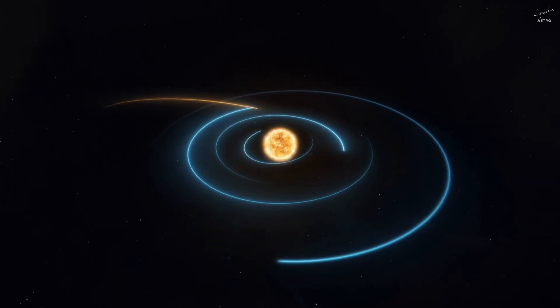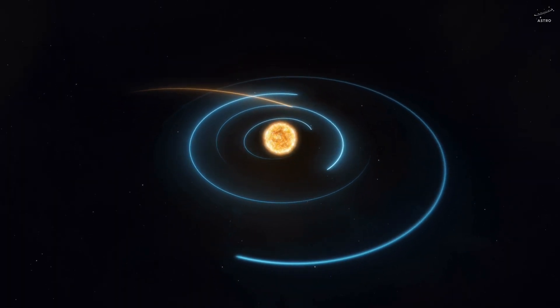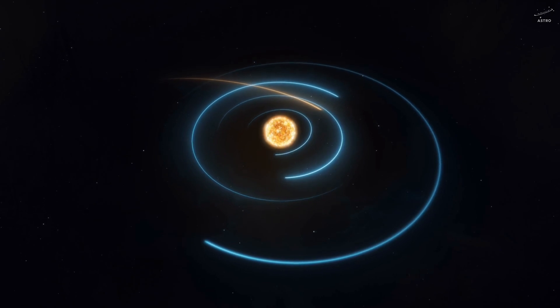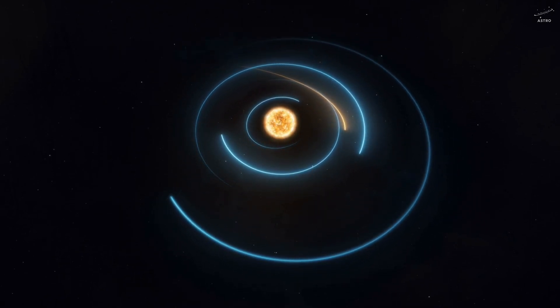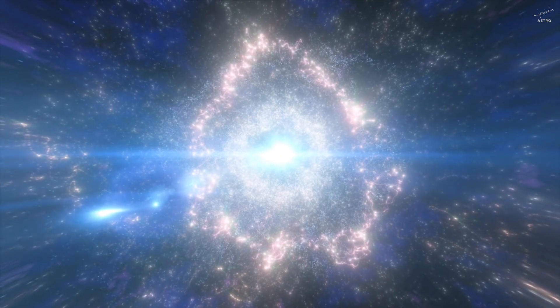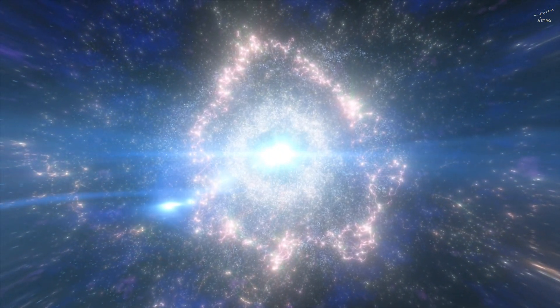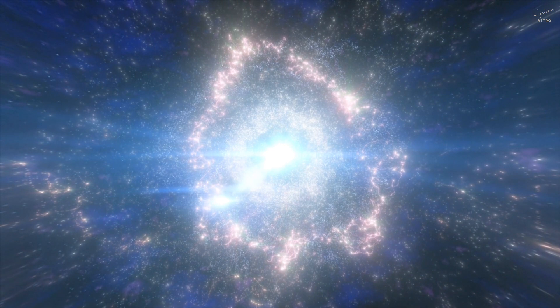And with each orbit, it falls deeper. The heat intensifies, the pressure mounts. Its path tightens, like a noose slowly closing.